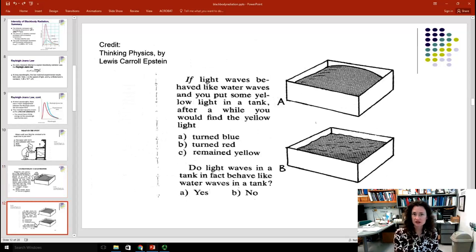Now, let's think about these ideas that we've taken from water waves and apply it to light. If light waves behaved like water waves, and you put some yellow light in a tank, after a while, you would find that the yellow light would turn blue. Now, we know now that that's crazy, that you can't put yellow light inside of something, and then have it turn blue, because the blue light is more energetic than the yellow light. We know this now.